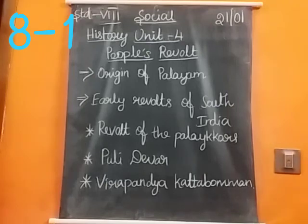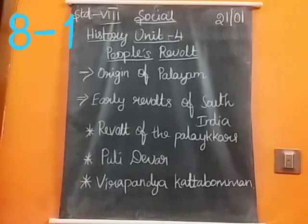1757 disrupted the political, social and economic order of the country. This led to the divesting of many landlords and chiefs of their power and estates. So what did the British do to the landlords and chieftains?